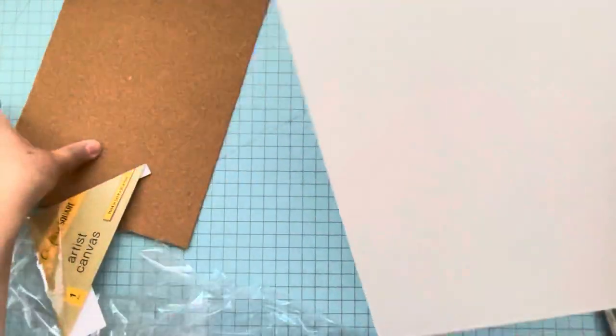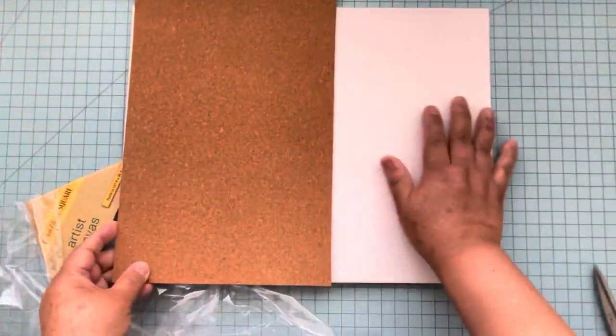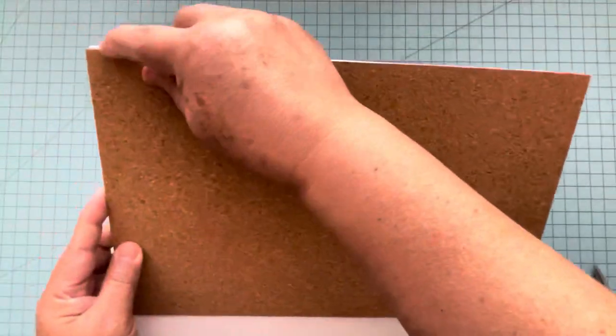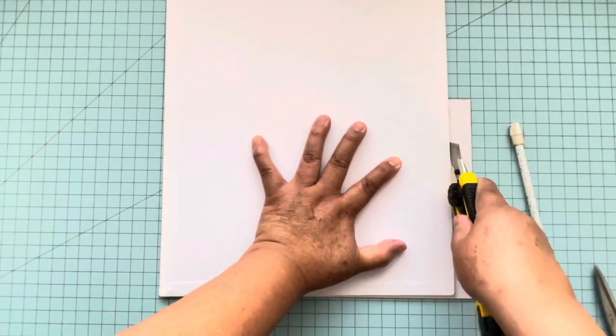So I can apply the cork board on this side and use this part to embellish my board. Before I adhere the cork, I will measure and cut the excess.